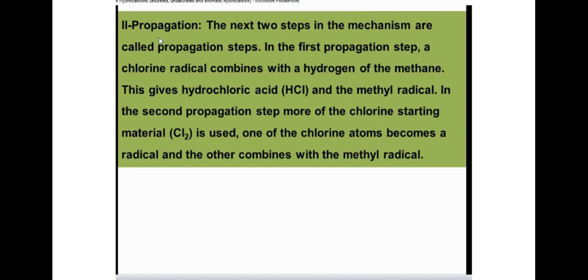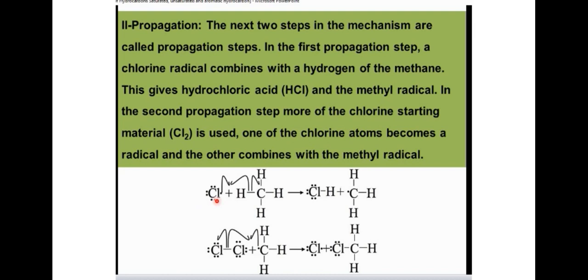The second step is propagation — the longest step in free radical substitution, involving two sub-steps. In the first sub-step, the chlorine radicals combine with a hydrogen atom of methane, extracting hydrogen from methane to produce HCl and CH₃ radicals. In the second sub-step, the CH₃ radicals further combine with a chlorine molecule to form chloromethane (CH₃Cl) and new chlorine radicals for further propagation. So: chlorine radicals extract hydrogen to form HCl and methyl radicals; then a fresh chlorine molecule combines with methyl radicals to form chloromethane and regenerate chlorine radicals.